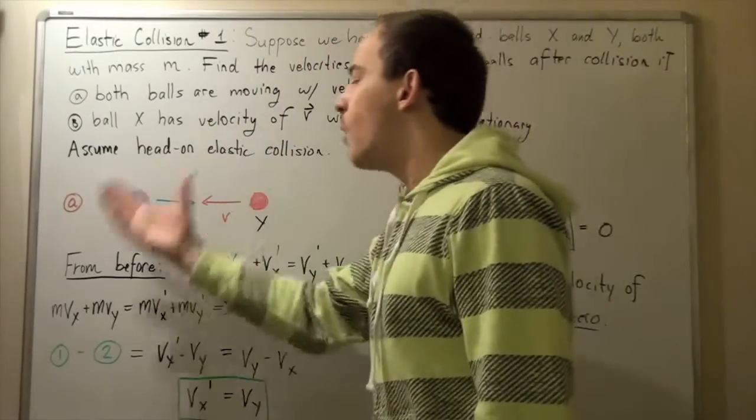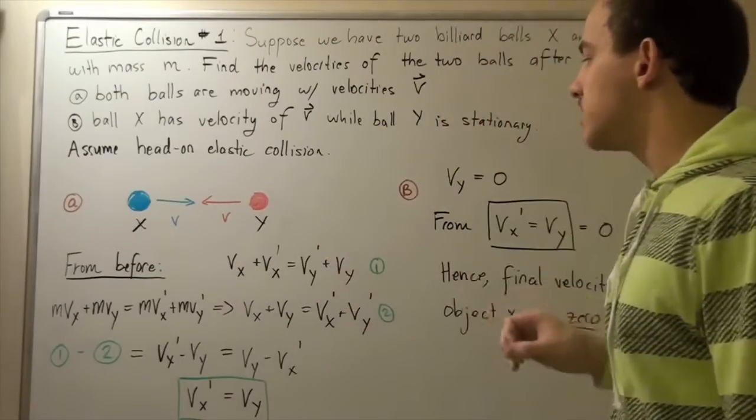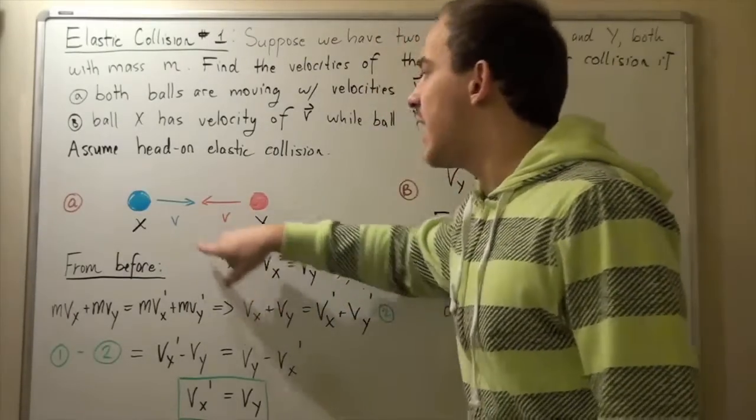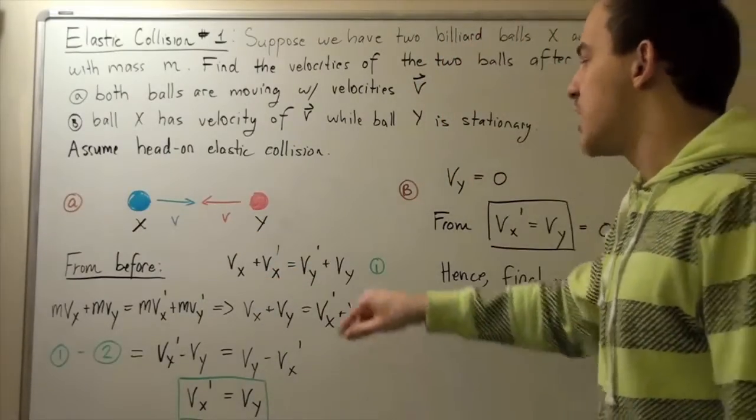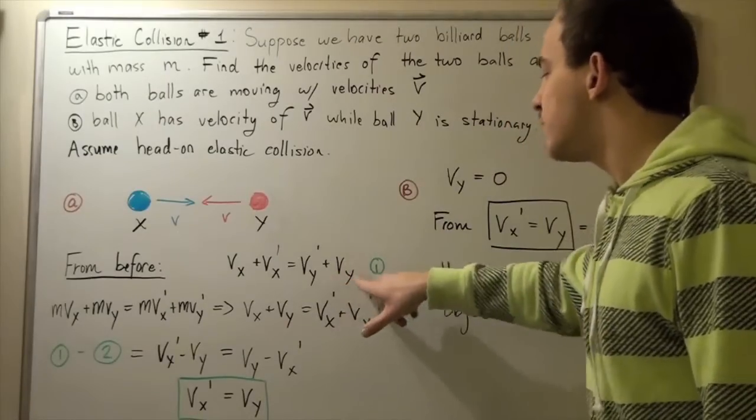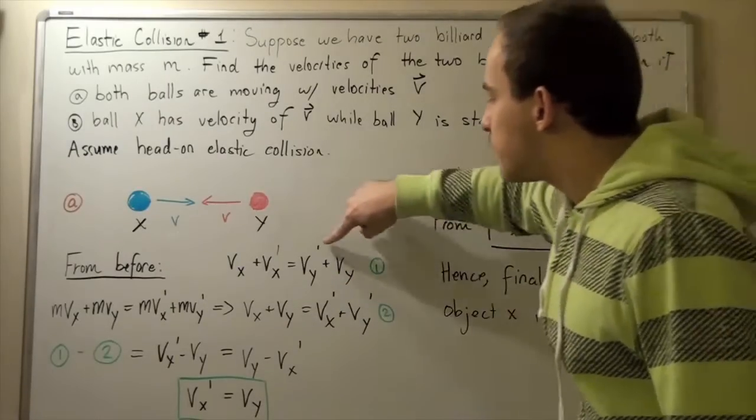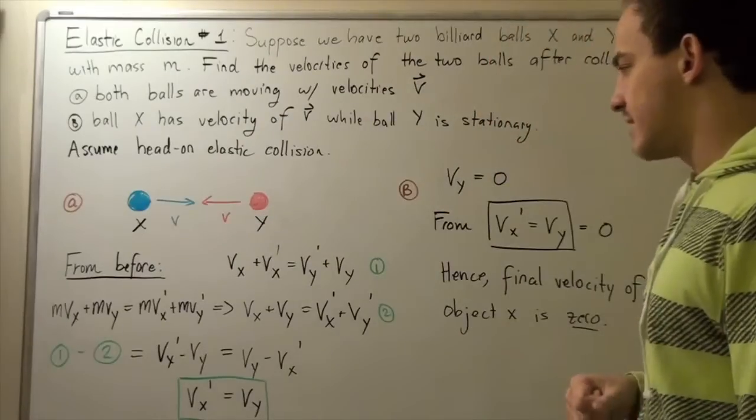From before, from our other lecture, we know the following result: my initial velocity of ball X plus my initial velocity of ball Y equals my final velocity of ball X plus my final velocity of ball Y, where the primes (these dashes) simply represent the final velocities.